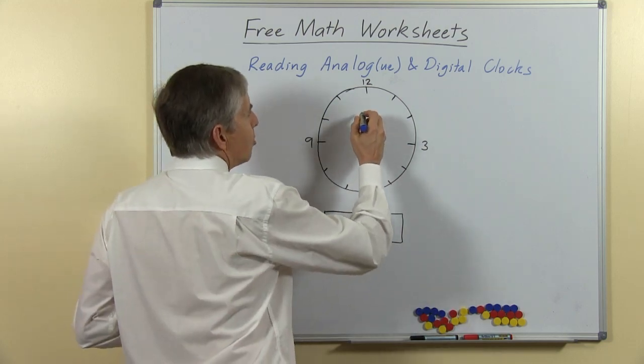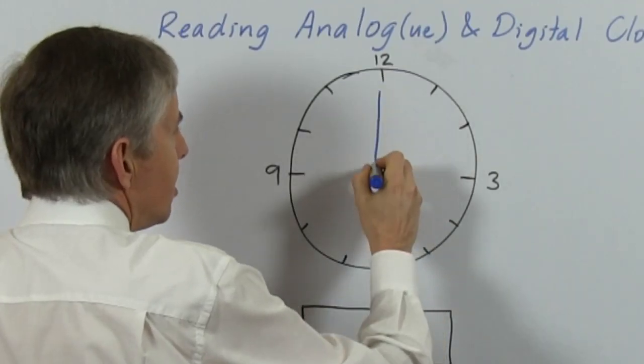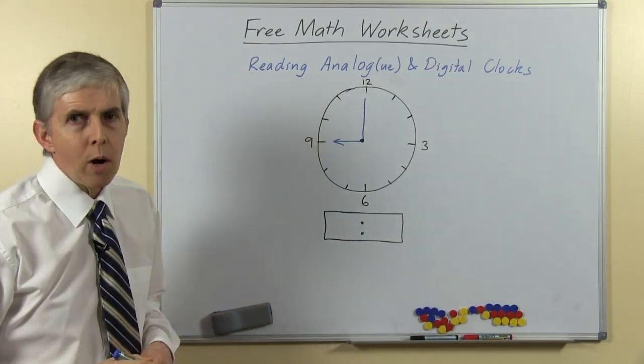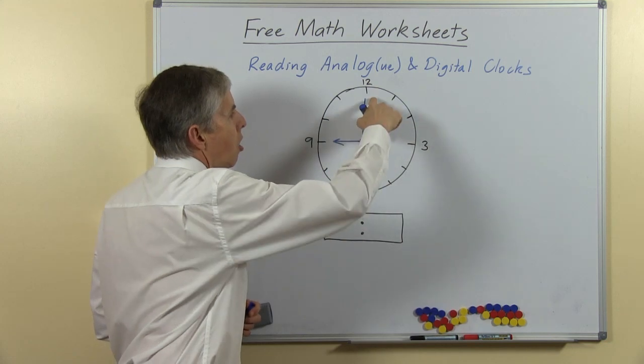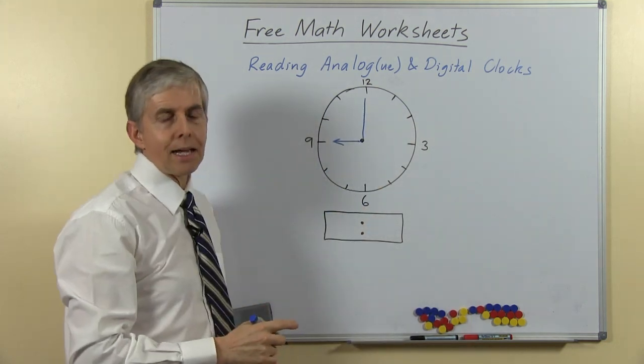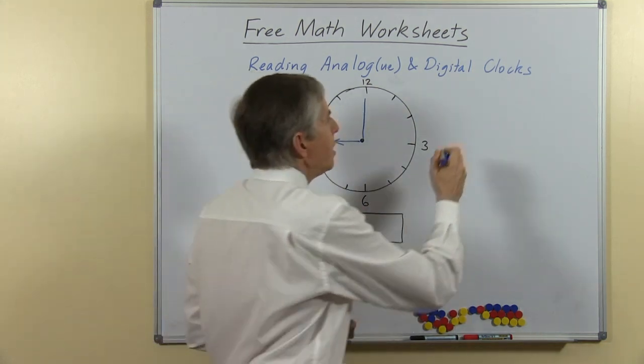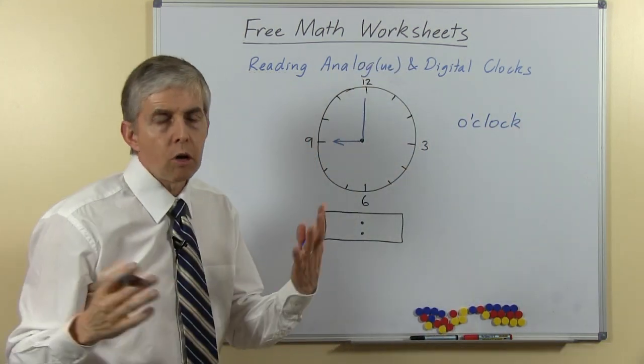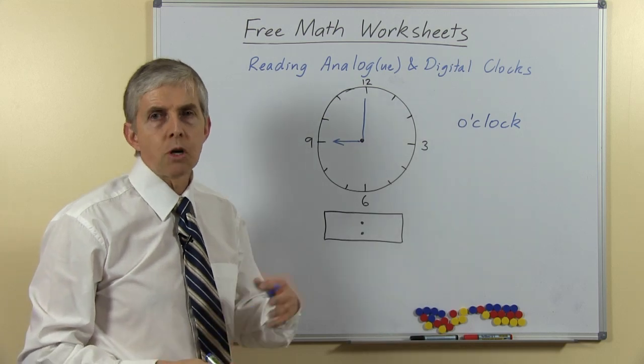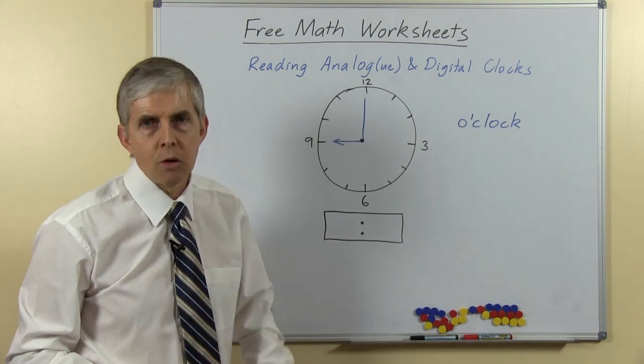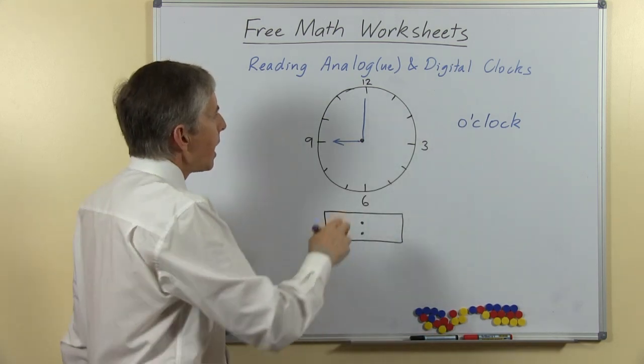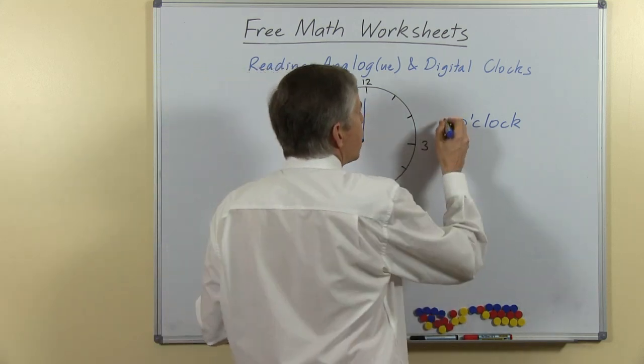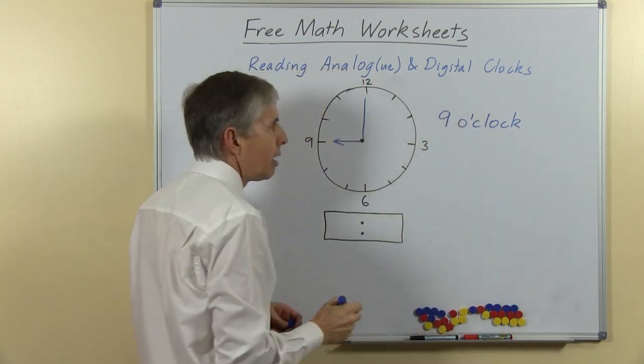So let's start with a nice easy time. When the long hand, which is called the minute hand, is pointing at the 12, then that time is something o'clock. The word o'clock really means of the clock, but we never say that anymore, we just say o'clock. And the short hand points at the number of hours and tells us which o'clock it is, so in this case it's nine o'clock.